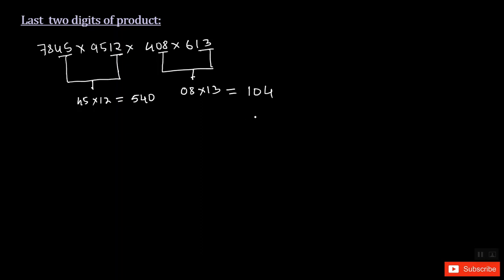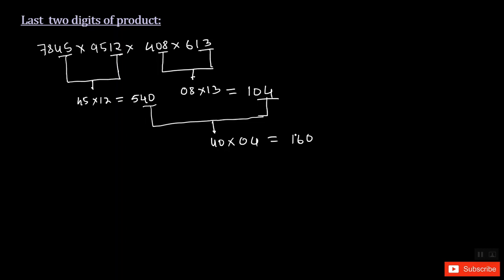Once done with this, take the last two digits of each result: 40 from 540 and 04 from 104. Now multiply 40 times 4, which is 160. So the last two digits of this entire product are 60.